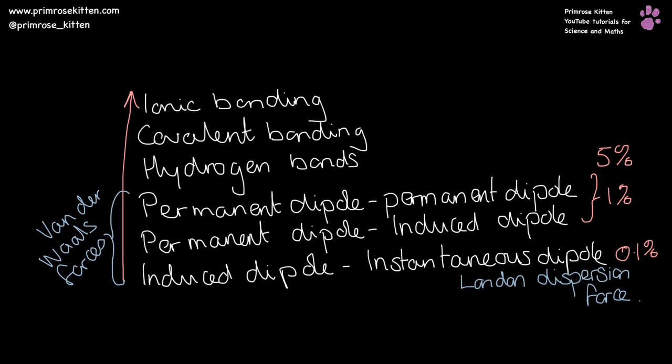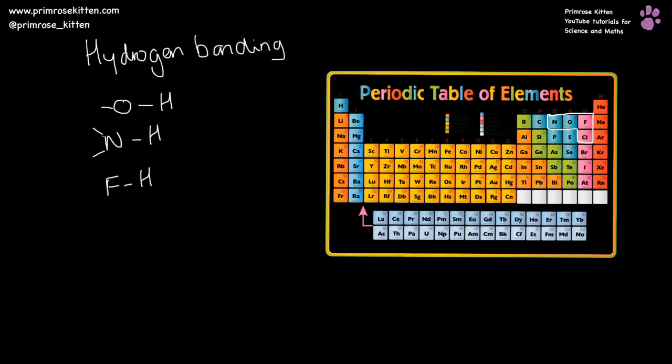I'm going to be making separate videos on each of these to fully explain them. If we remember our lesson on electronegativity and bond polarity, in the top right-hand corner of the periodic table we have nitrogen, oxygen, fluorine, and chlorine. Hydrogen bonding occurs whenever hydrogen is attached to nitrogen, oxygen, or fluorine, but not chlorine.